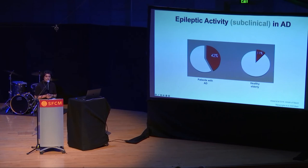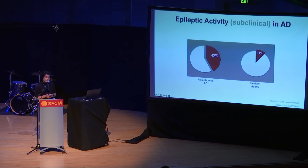These are subclinical, so patients do not know that they're happening. There are no clinical manifestations. But this abnormal electrical activity is happening inside their brains, and it occurs in about 42% of patients with Alzheimer's disease, compared to 11% in normal, healthy elderly.